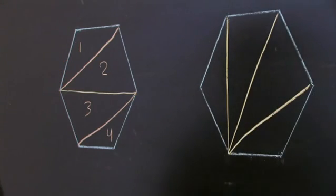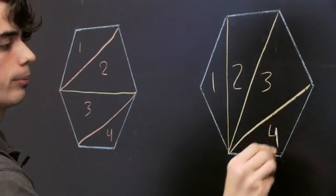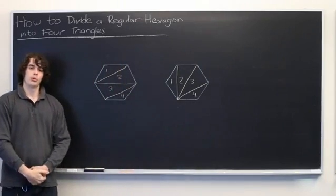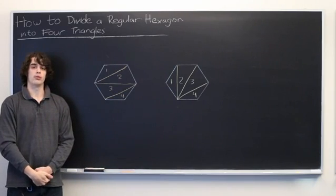And just like that, we have four triangles. One, two, three, four. My name is Ryan Malloy and we've just discussed how to divide a regular hexagon into four triangles.